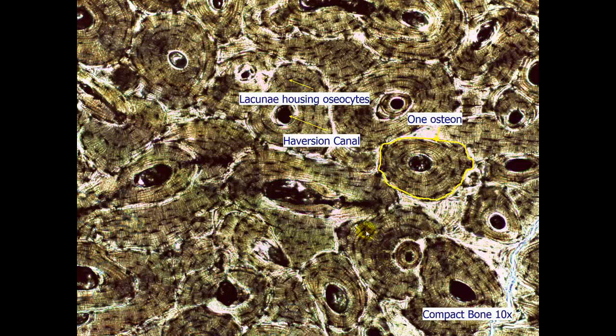Here is a slide showing compact bone. Each of these bullseye looking structures that we see in this slide is one osteon. This osteon has several structures within it. One of the main ones being a haversion canal that is the central canal that runs through the osteon that carries the blood vessel and the nerve. You also have these black spots that we see everywhere. These black spots are the lacunae that are housing osteocytes or the bone cells themselves.